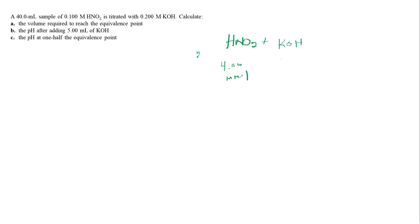We just calculated that we have 4.00 millimoles of nitrous acid, and we've just added, when we added 5 milliliters of 0.2 molar, we added 1.00 millimoles of potassium hydroxide.